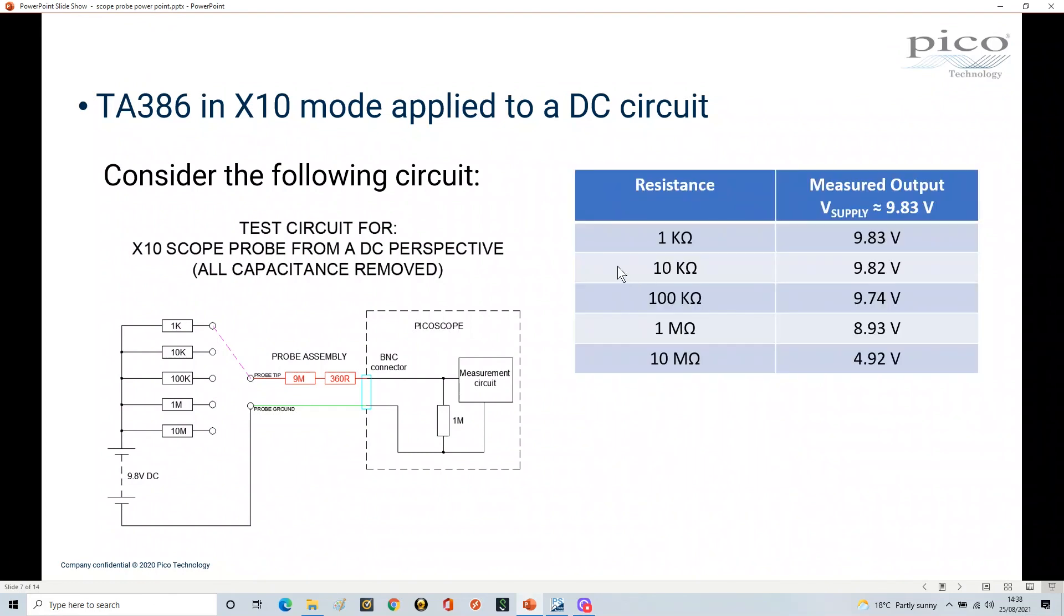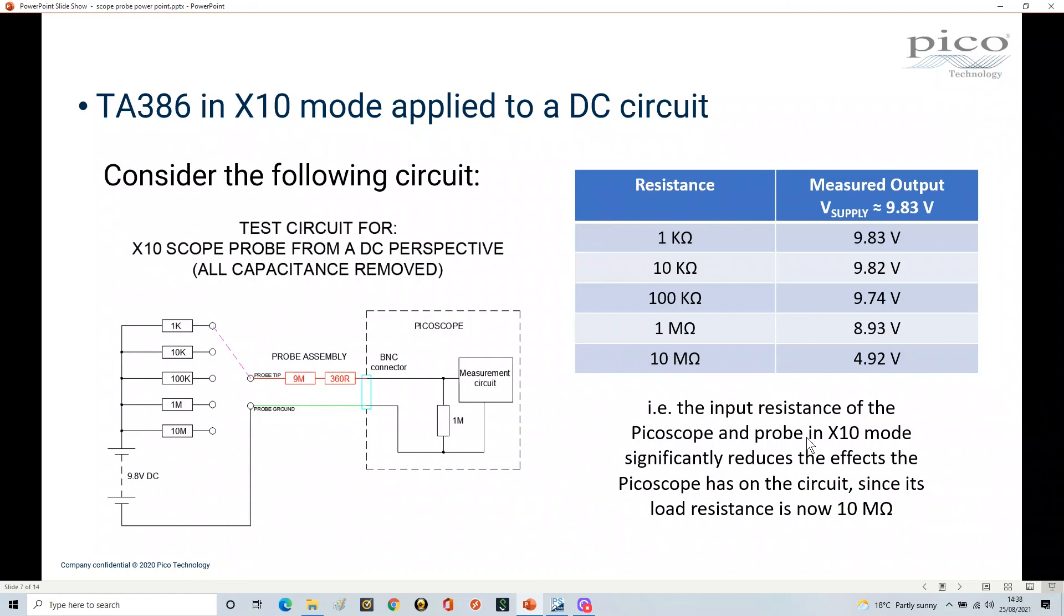I've tabulated those results. At 1K, we had 9.83, which is great, and all the way through down to 10 meg. What we see here is by putting our probe on times 10, we've got a much larger impedance now, and therefore it doesn't load this circuit in quite the same way. By putting your probe on times 10, we have less of an impact on our circuit from a DC perspective. So if we're using a choice between times one and times ten, when it comes to DC circuits, unless it's very small signals, we'd certainly recommend going to the times 10 mode because you'll get a better response, as your probe and oscilloscope aren't interfering with the circuit in the same way.